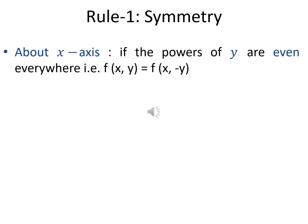Symmetry plays a very important role in tracing a curve. If you want to draw your curve you need to draw it in all four quadrants, but if you know it is symmetric about the x-axis you only draw above the x-axis and the mirror image appears below. The first type of symmetry is about the x-axis: check the powers of y. If all powers of y are even, the curve is symmetric about the x-axis. In that case f(x, y) always equals f(x, −y), meaning if we replace y with −y the equation is unchanged. For example, the parabola y² = 4ax has y appearing with power 2, which is even, so the curve is symmetric about the x-axis.